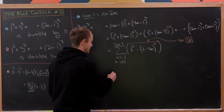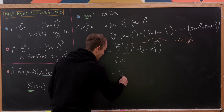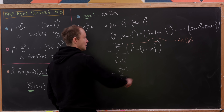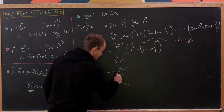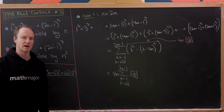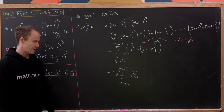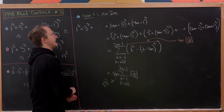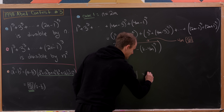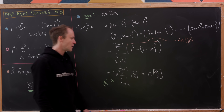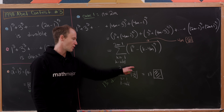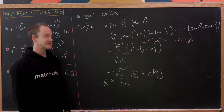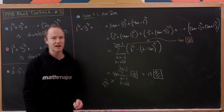Now we have the sum over odd k from 1 to 2m minus 1 of 4m — which we can factor out — times some number depending on k. But 4m is exactly 2 times n, so this ends up being n times some number. Being equal to n times something is the same as being divisible by n. That clears up the first case.